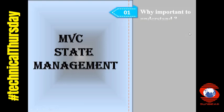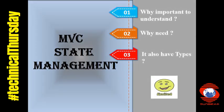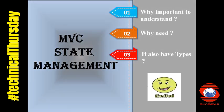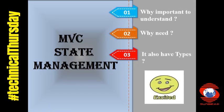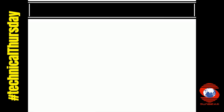MVC state management. Why is it important to understand? Why do we need it? It's also a type. State management is the process by which a developer can maintain the state and page information over multiple requests for the same or different web pages in web applications.